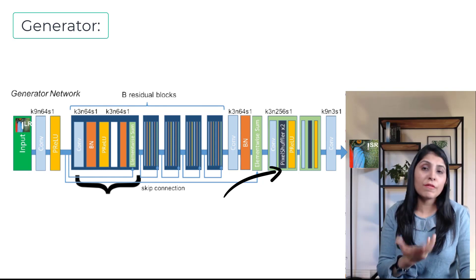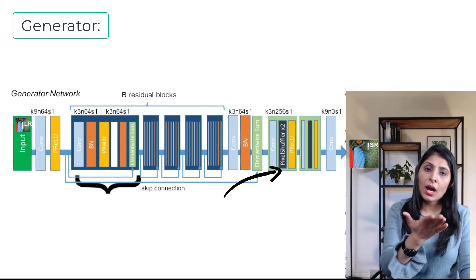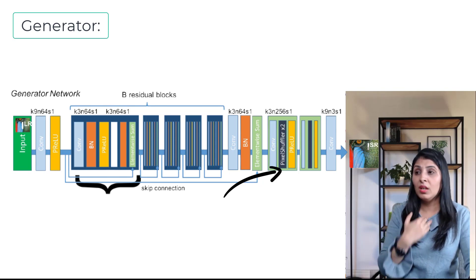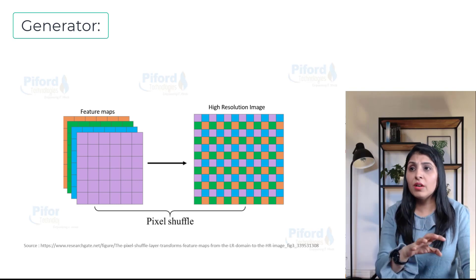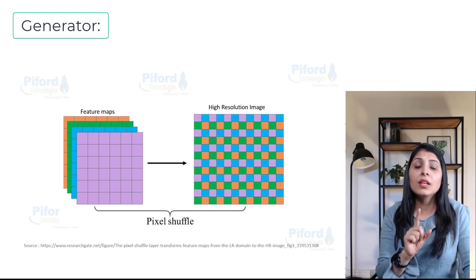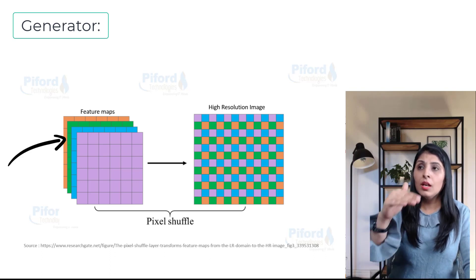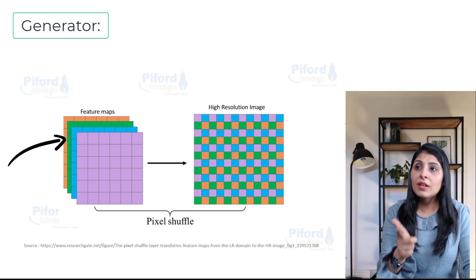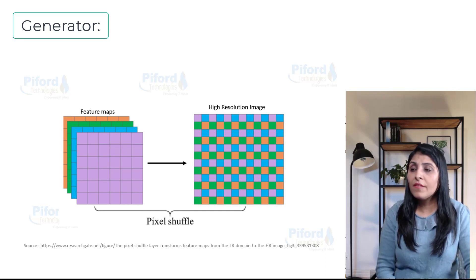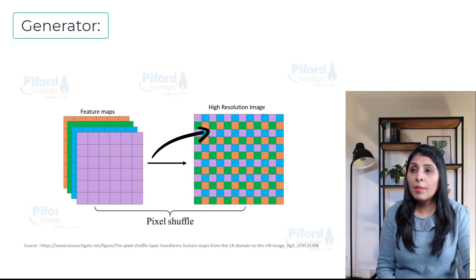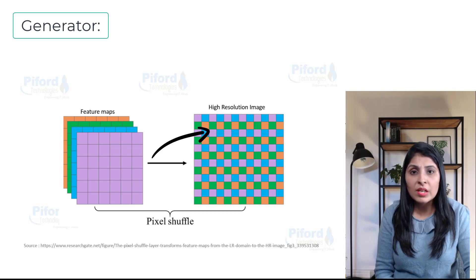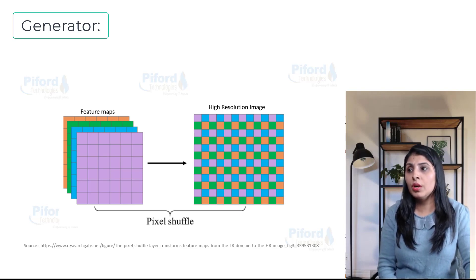The pixel shuffle layer transforms the feature maps from low resolution to high resolution. The pixel shuffler converts the number of channels into height and width — you can see that the number of channels are converted into height and width, increasing the resolution of the image. That's how the pixel shuffler works. Finally, after passing through all these layers, the generator produces a high resolution image.